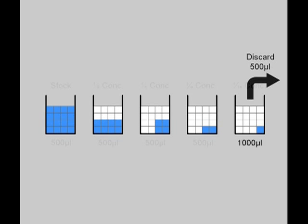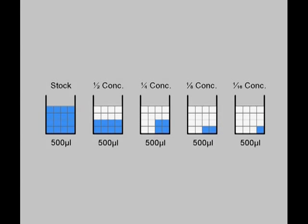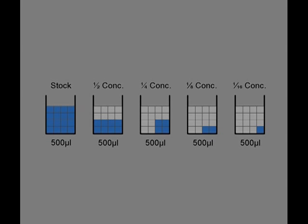Finally, 500μL of the 1 in 16 solution is discarded to give the same final volumes across the entire series. The serial dilution is now complete, and an accurate dilution range has been produced.